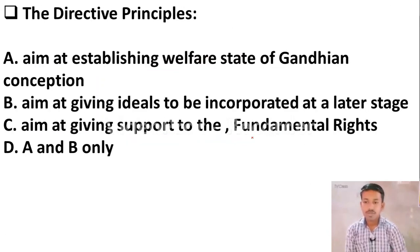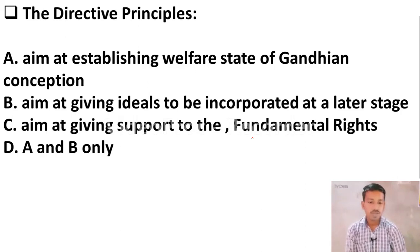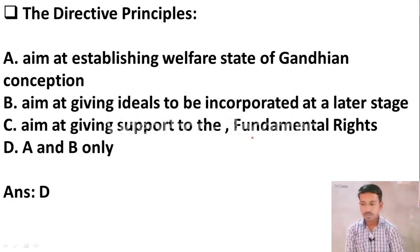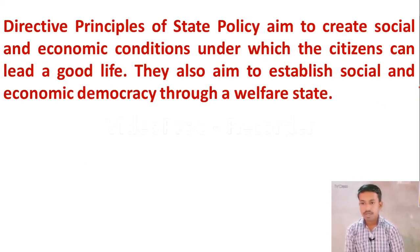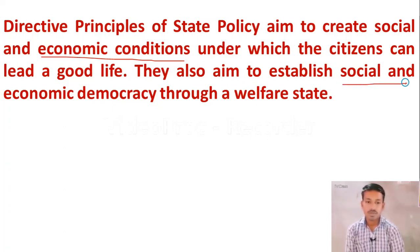Next question: The Directive Principles — Option A: aim at establishing welfare state of Gandhian conception. Option B: aim at giving ideals to be incorporated at a later stage. Option C: aim at giving support to the fundamental rights. Option D: A and B only. The right answer is Option D — A and B. The Directive Principles of State Policy aim to create social and economic conditions under which citizens can lead a good life, and also aim at establishing social and economic democracy.